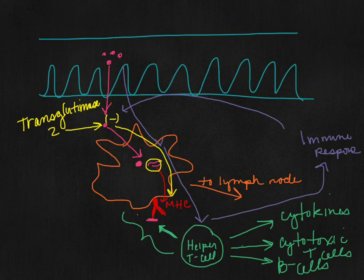The inflammation from the cytotoxic T cells and the interactions with the cytokines cause these villi to slowly get destroyed.